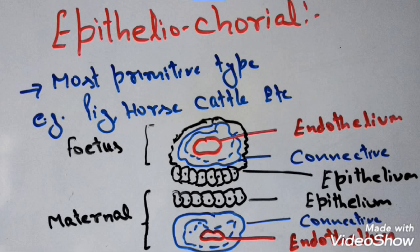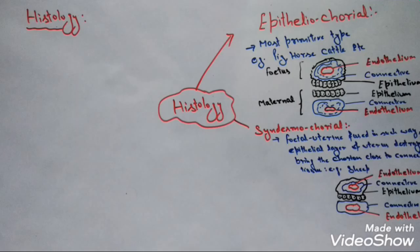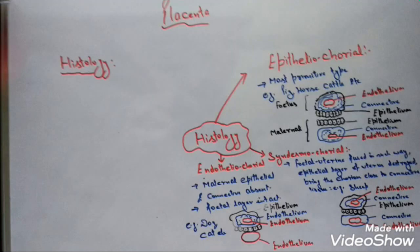In the next classifications, we are going to decrease the number of layers. The second type is syndesmochorial type of placenta. Here all three tissues of the fetus remain intact — endothelial, connective, and epithelial — whereas the maternal uterine tissue loses its outermost layer, that is the epithelial tissue. So the epithelial tissue of the fetus lies in direct contact with the connective tissue of the maternal uterus. Example is sheep.